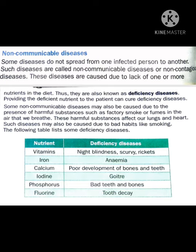The following table lists some deficiency diseases by nutrient. If vitamins are deficient in our diet, they may cause night blindness, scurvy, or rickets. Night blindness is caused due to the deficiency of vitamin A.